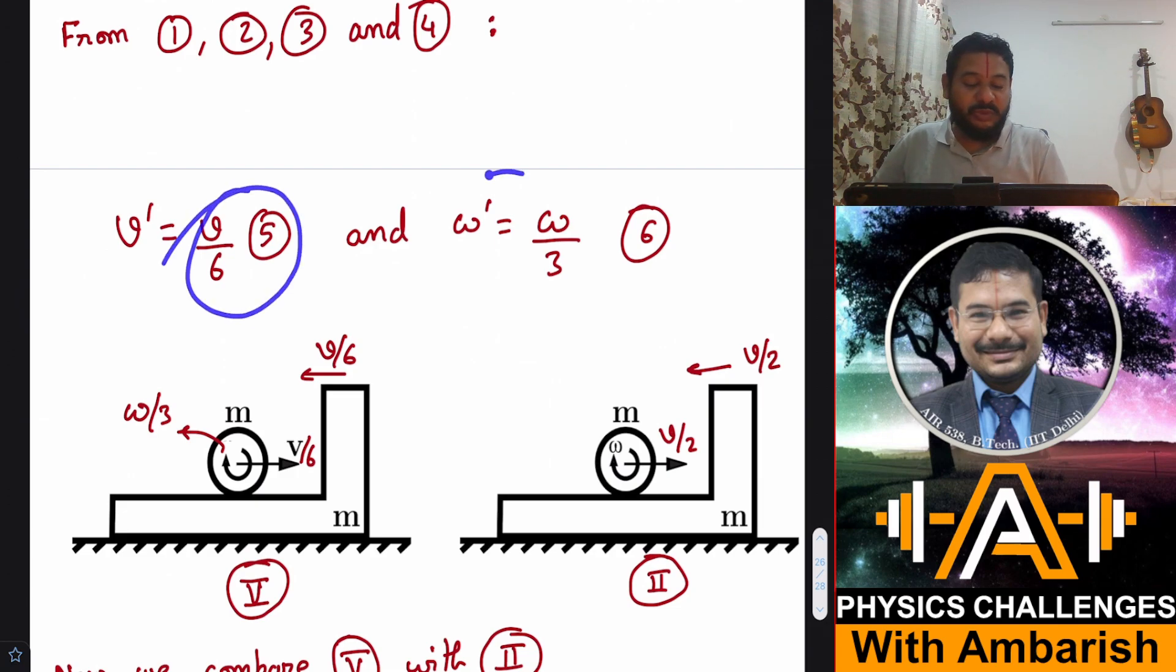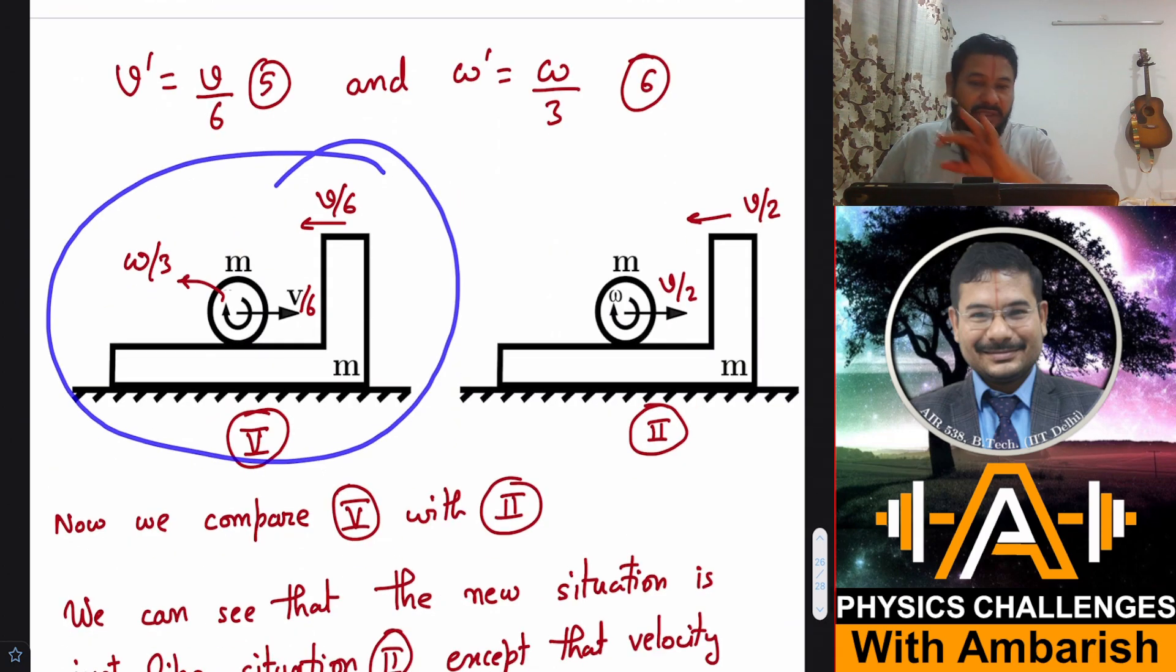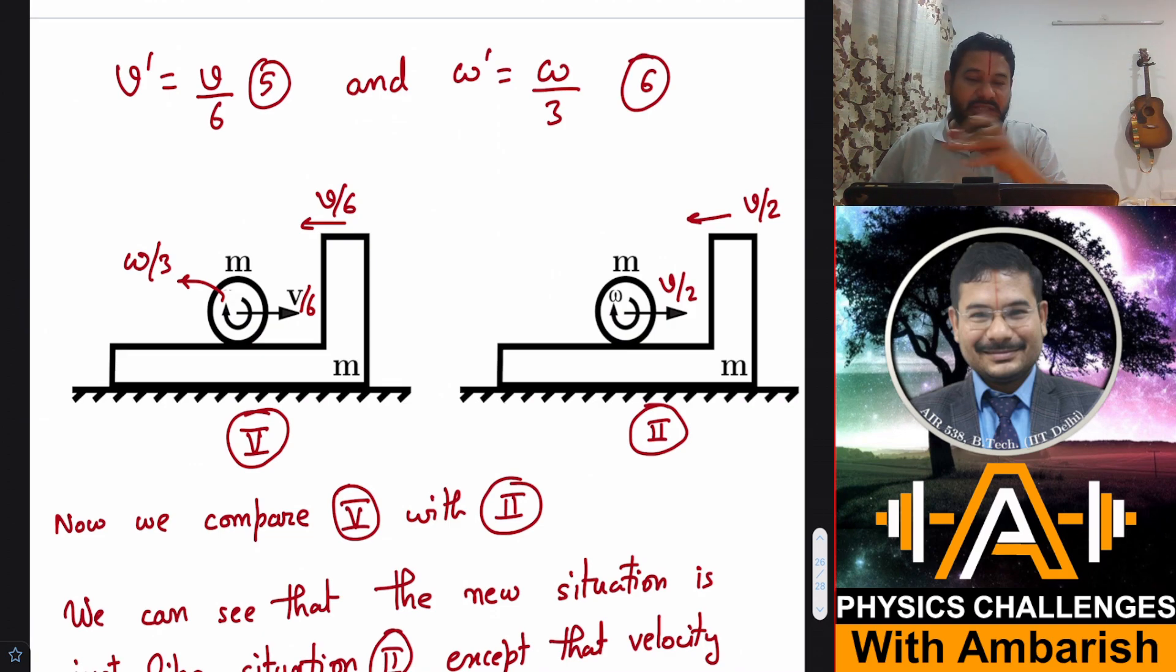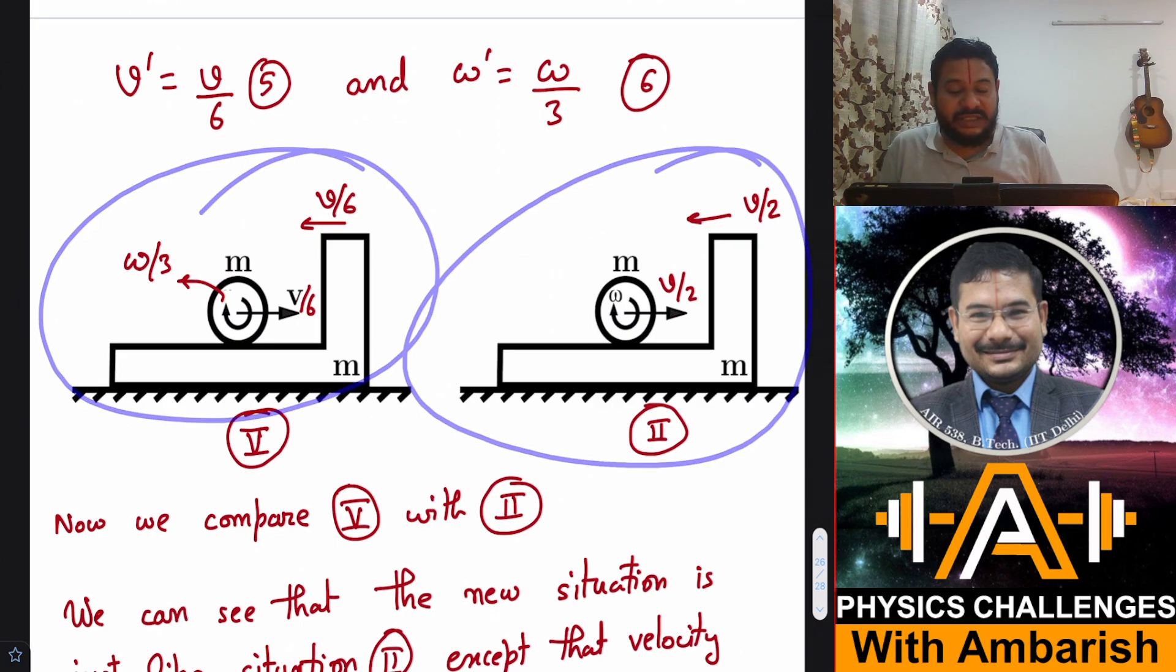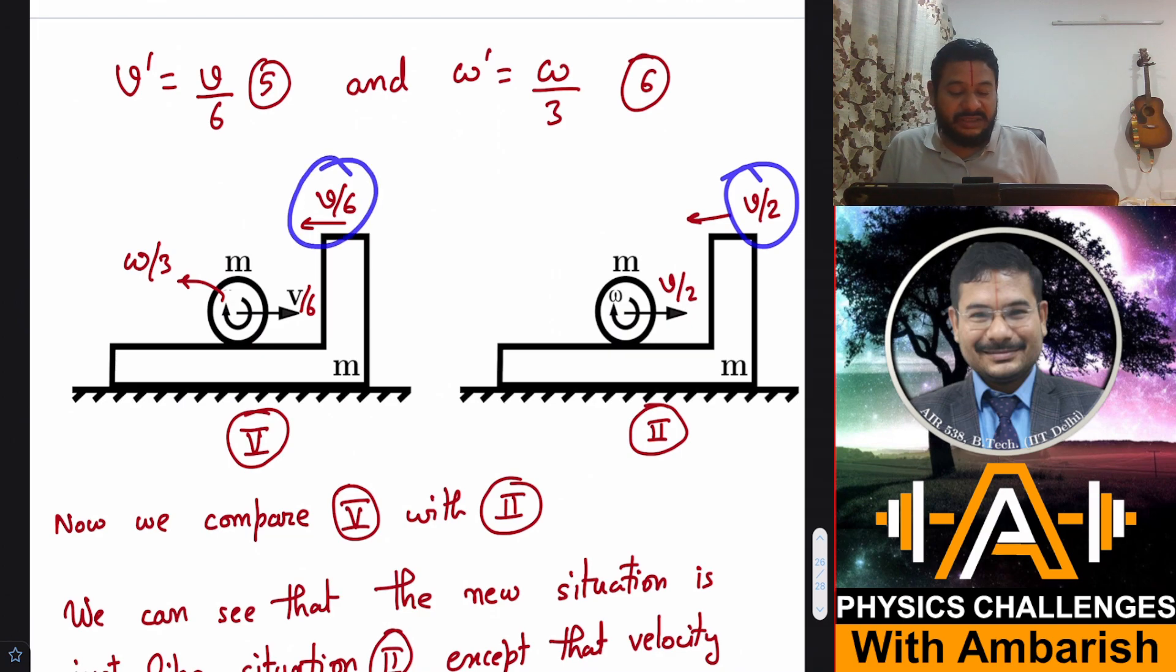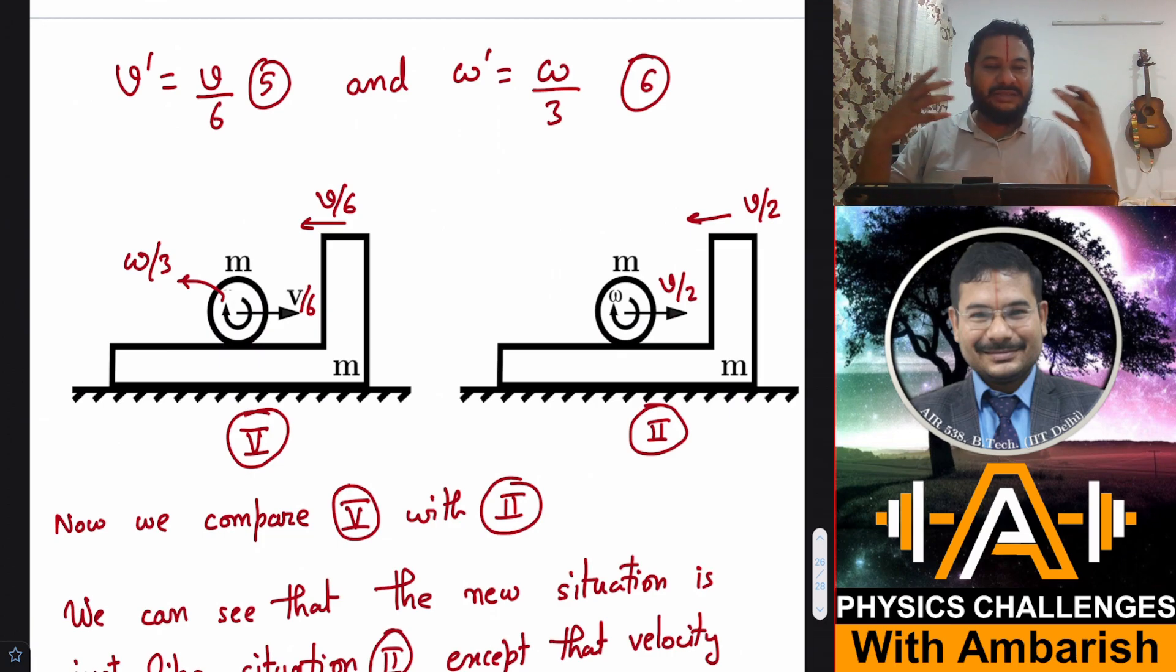So v' is v/6 and ω' is ω/3. Visually you can see this is what has happened. It collided, it went back a little bit, it started slipping, and again when it is rolling again, both of them are coming together like this with v/6, v/6 and angular velocity is ω/3. Now if you compare this with the diagram that I drew in figure two, this diagram looks just like the diagram in figure two, except that instead of v/2 I'm having v/6 and instead of ω I'm having ω/3. So what has happened? The whole system has started a fresh cycle except that the velocities are reduced by a factor of three and ω is also reduced by a factor of three.